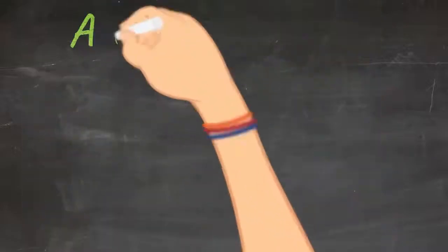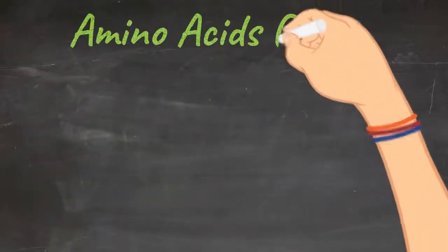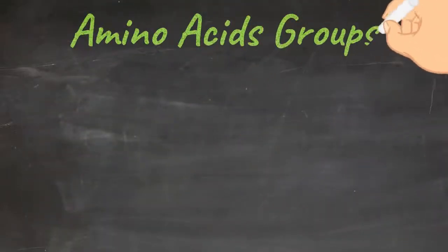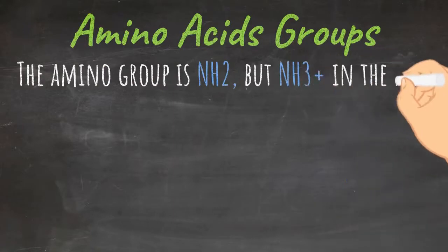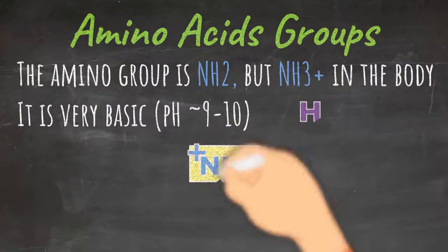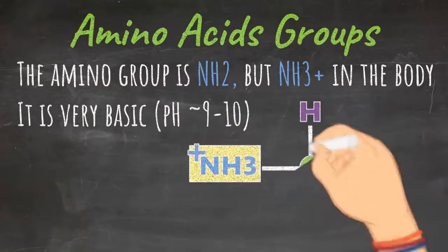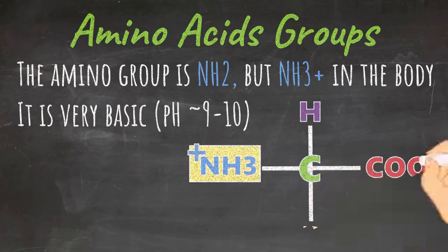The amino group is represented with NH3, meaning there are three hydrogens to one nitrogen. It is very basic, with a pH between nine and ten.